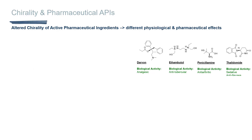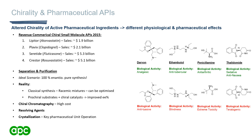Prior to discussing the case studies, I'll do a brief recap on chirality in active pharmaceutical ingredients. With altered chirality can come altered physiological and pharmacological effects. For example, the stereoisomers of the APIs shown are beneficial treatments for nausea, arthritis, and tuberculosis. Unfortunately, their chiral analogues cause disastrous effects such as blindness, toxicity, and teratogenic fetal abnormalities — that last one being the thalidomide case.